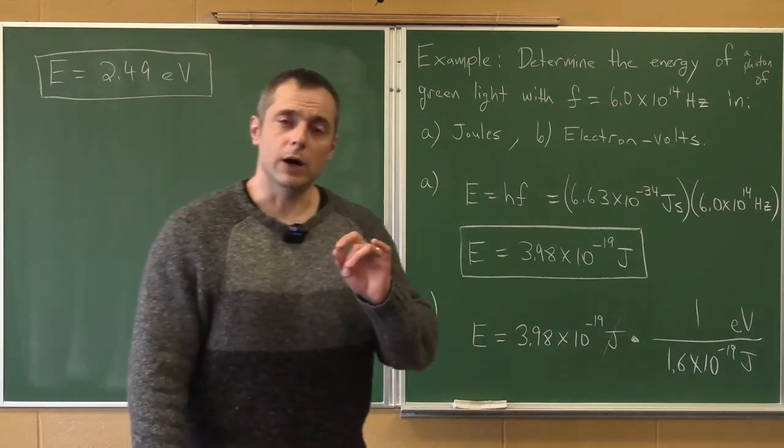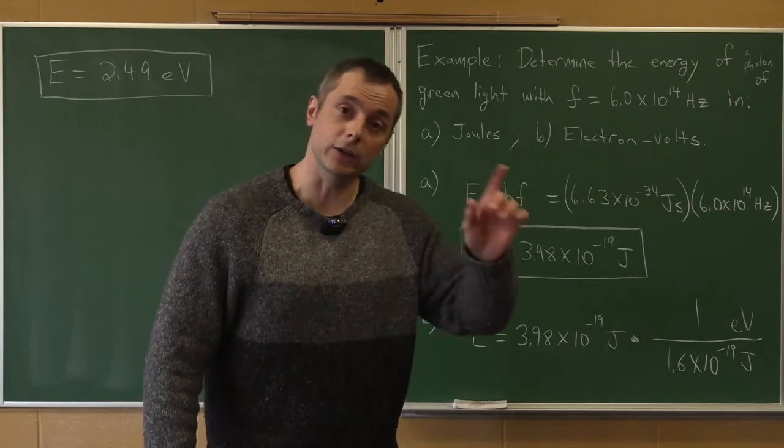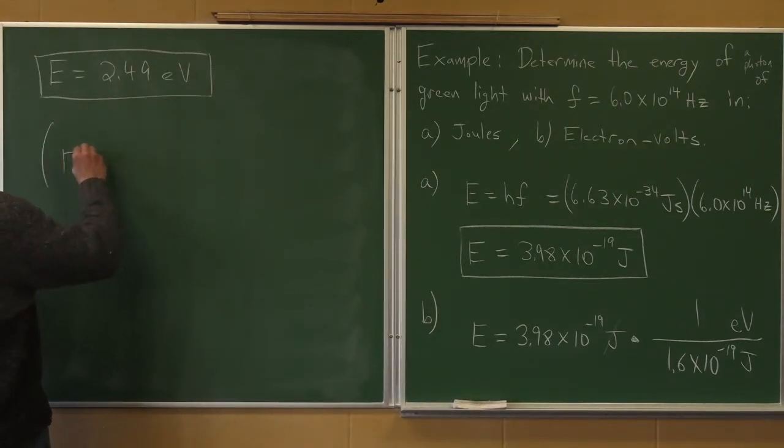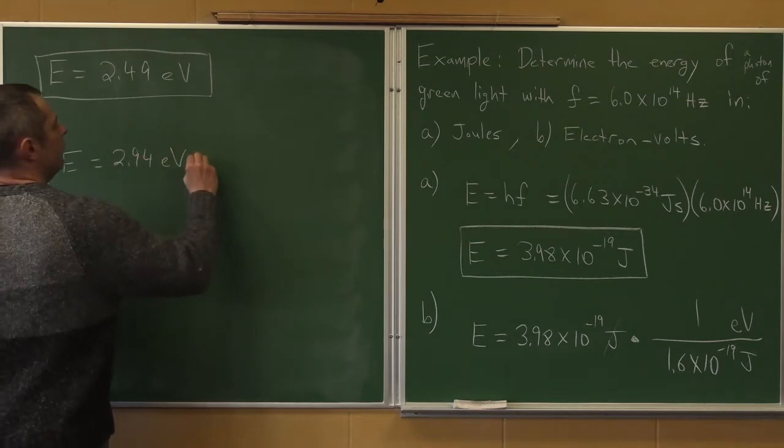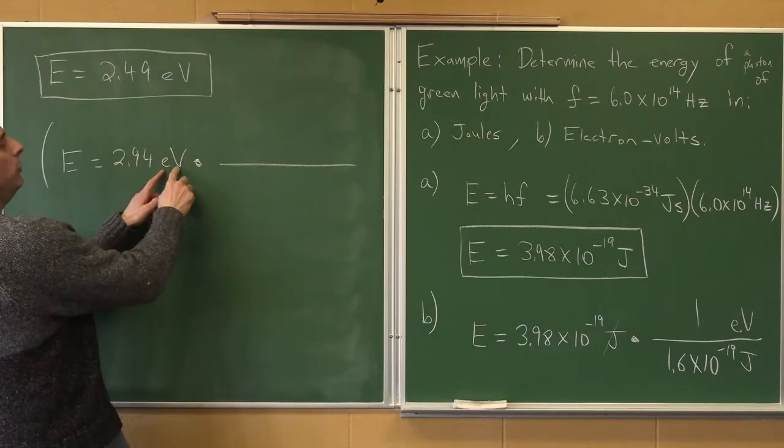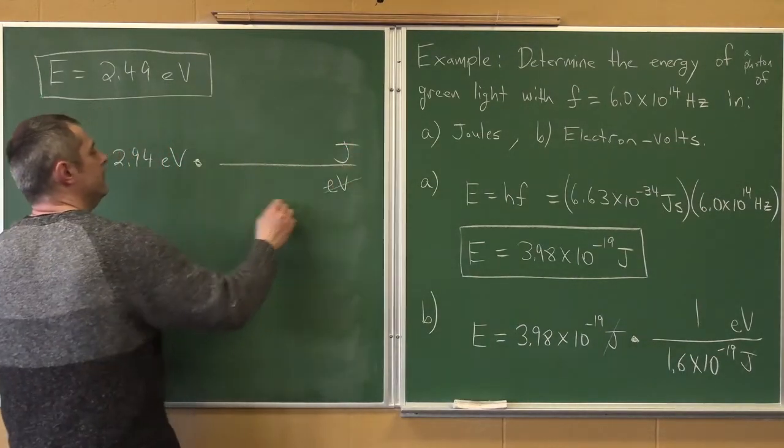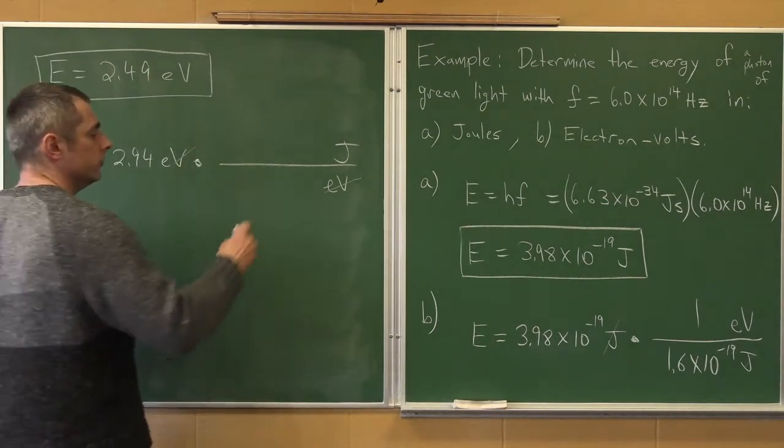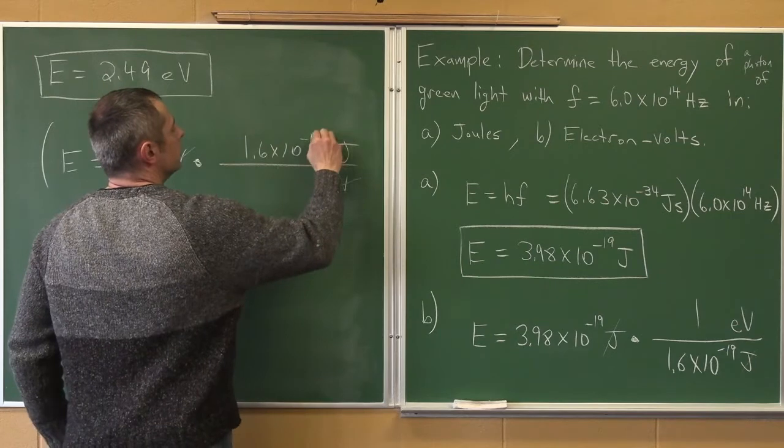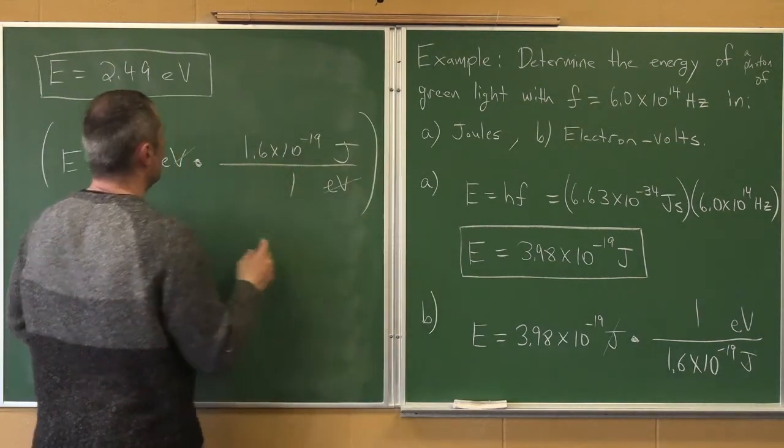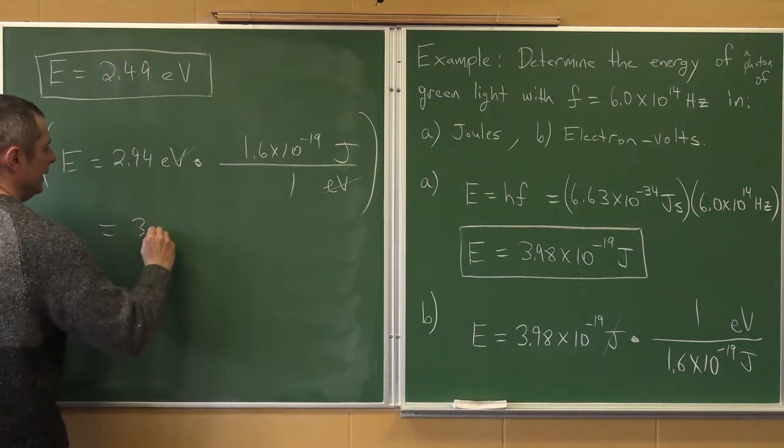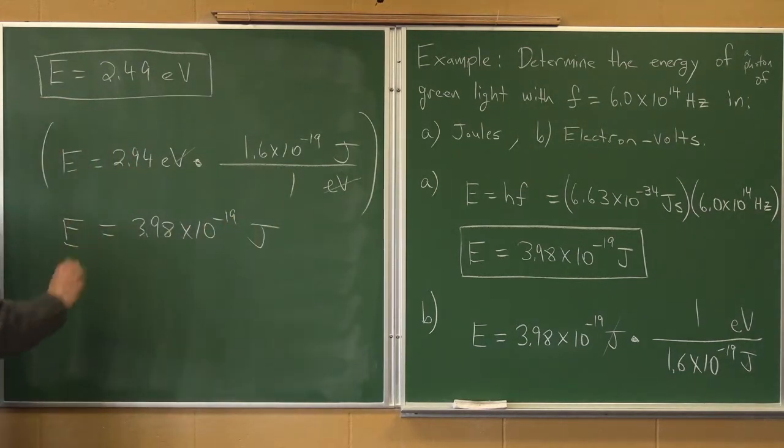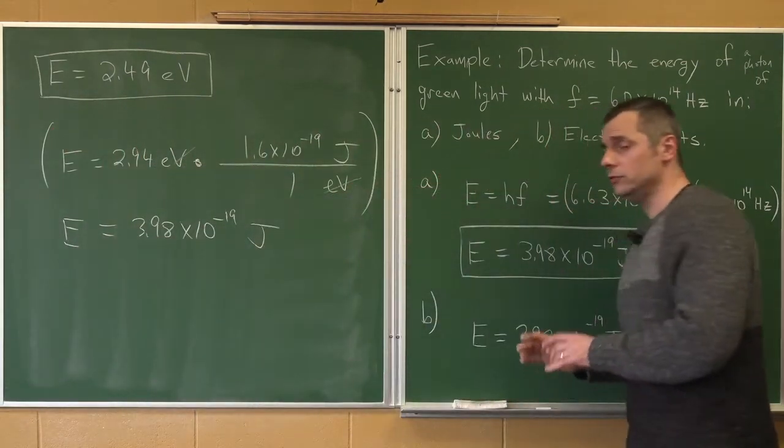See how much easier that is. You just say 2.49. That's the energy in the electron volt. Now before I move on, I want to just show you how you would convert if you had electron volts and you wanted to go back to joules. We had joules, we went to electron volts. What if you have this and you want to go back to joules? It's basically the same kind of operation. You could say E equals 2.94 electron volts multiply by a fraction. This time, we want EVs in the bottom and joules in the top, so the EVs go away, leaving us joules. 1.6 times 10 to the minus 19 joules to 1 electron volt. So now we're taking this 2.94, multiplying by that, and we get the original 3.98 times 10 to the minus 19 joules.